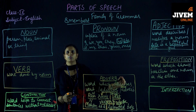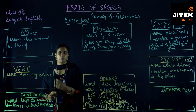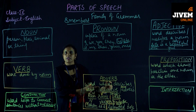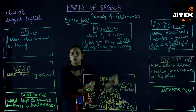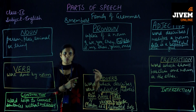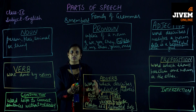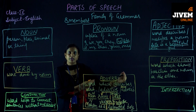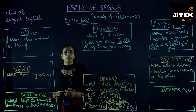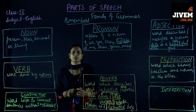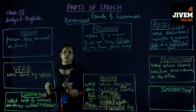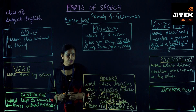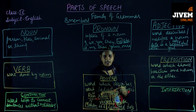Take another example: 'Sita is not present in the class, Gita is not present in the class.' Both sentences carry the same meaning written separately. Using a conjunction, we can say: 'Neither Sita nor Gita is present in the class.' So conjunction helps connect sentences without changing their meaning.